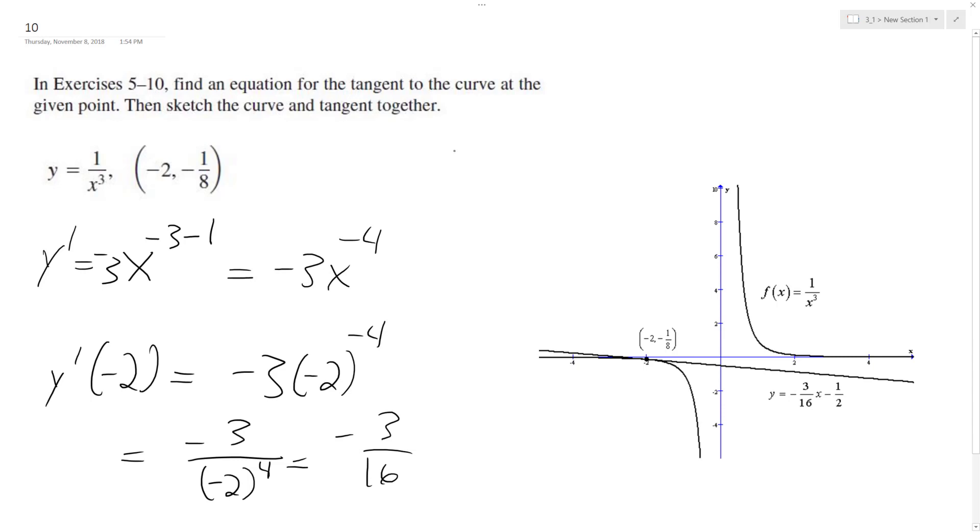So what we have here is we're going to use our point slope form. So y minus negative 1 eighth, so plus 1 over 8, is equal to negative 3 over 16 times x minus negative 2, so plus 2. Distribute this.